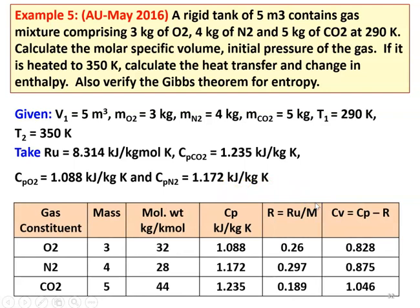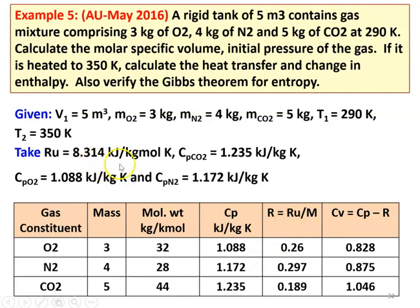We set up a table. First column: gas; second column: mass — O2: 3 kg, N2: 4 kg, CO2: 5 kg. Molecular weights: O2 = 32, N2 = 28, CO2 = 44. The individual gas constants R = Ru / M: R_O2 = 8.314/32 = 0.26; R_N2 = 8.314/28 = 0.297; R_CO2 = 8.314/44 = 0.189 kJ/kg·K.